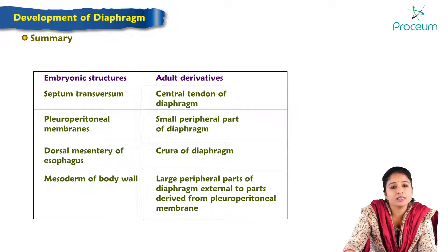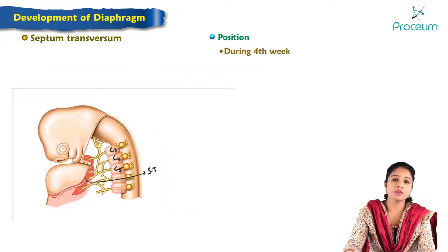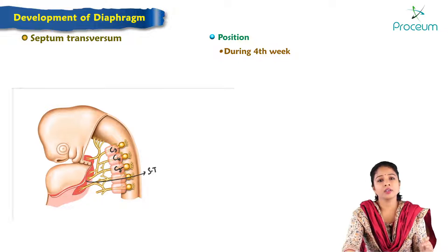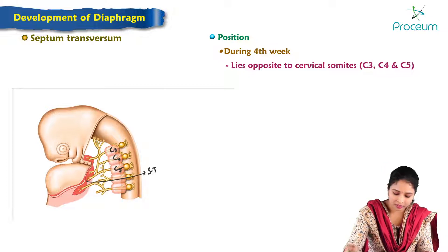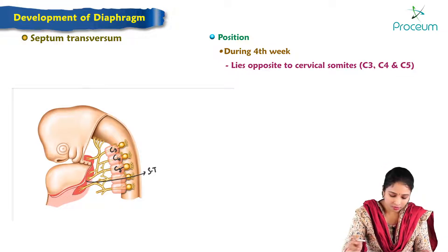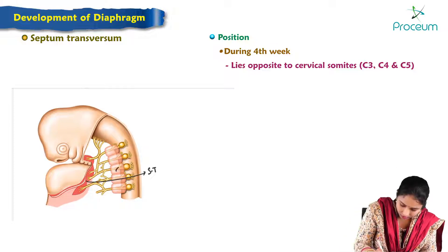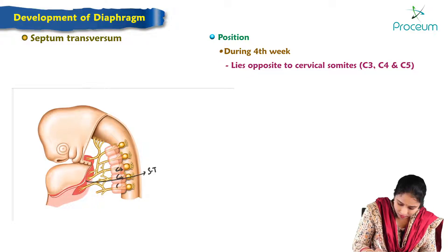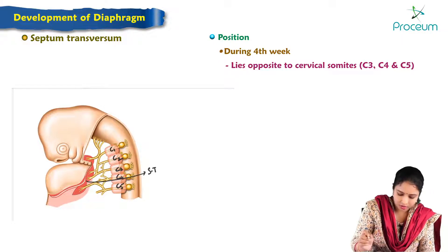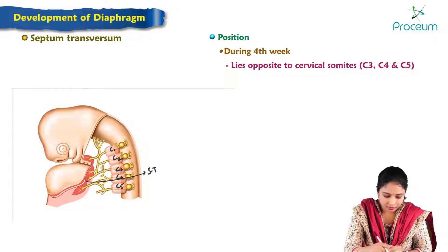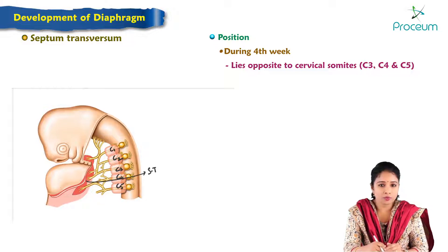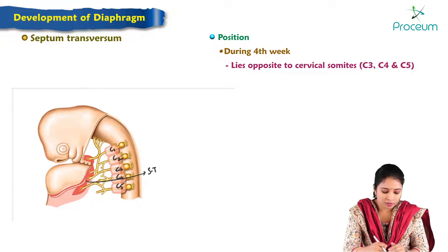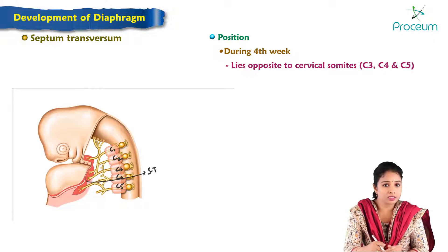Regarding the position of the septum transversum: during the fourth week of intrauterine life, the septum transversum lies opposite the cervical somites C3, C4, and C5. The cervical myotomes invade the septum transversum, forming the central tendon of the diaphragm. Therefore, the phrenic nerve has a root value of C3, C4, and C5.